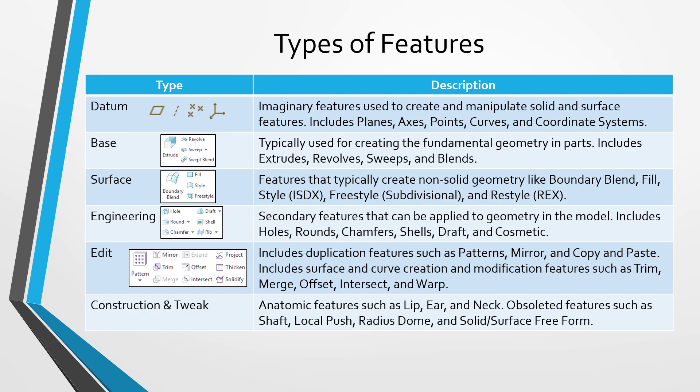Another class of features are called engineering features, previously referred to as pick-and-place features. These are features in which Creo Parametric already knows the general shape, so you define some references in order to locate them in the model. Those are things like holes, rounds, chamfers, shells, draft, and cosmetic features like cosmetic sketches and cosmetic threads.